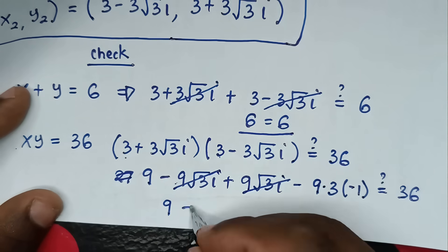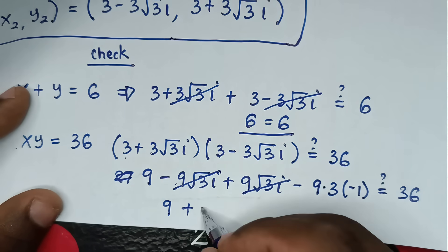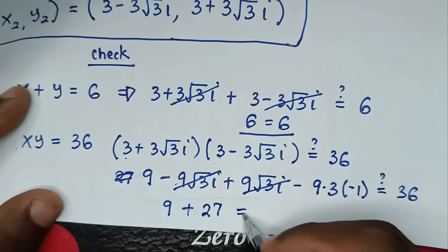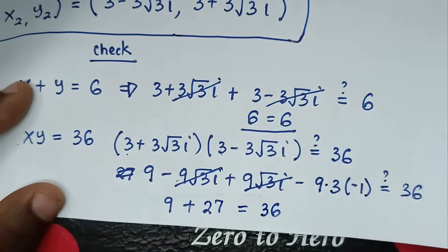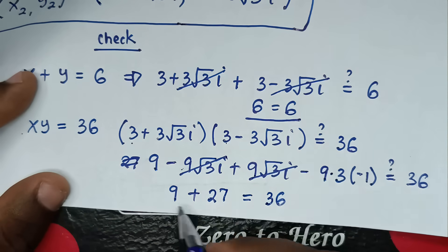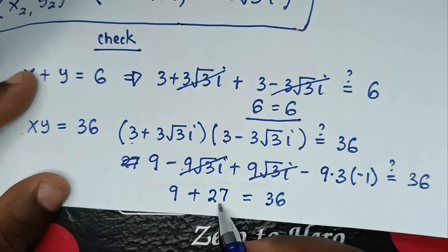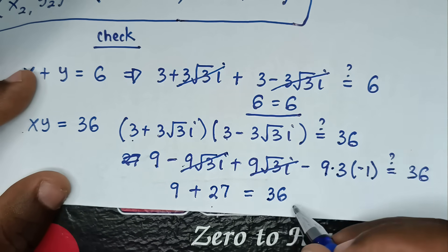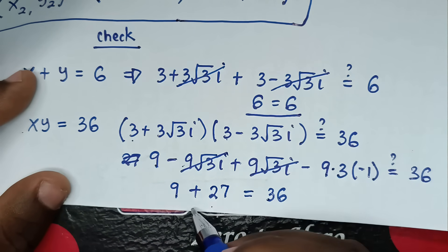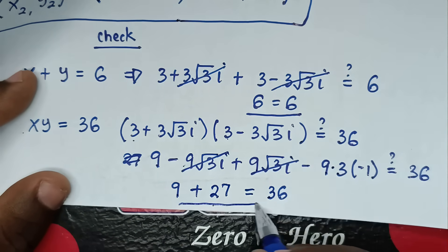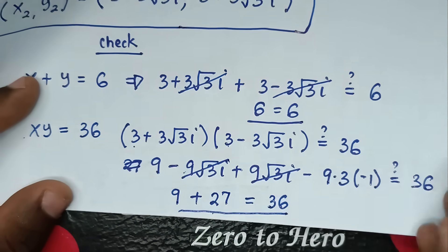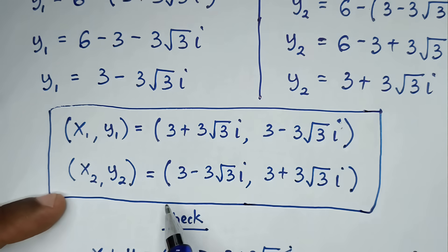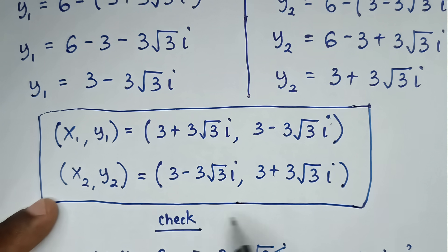So 9 plus 27 is 36, equal to 36. Left side and right side are equal. It is true for the first solution, and also the second solution is correct.